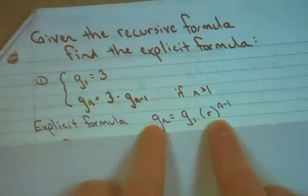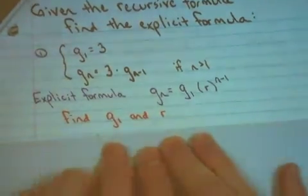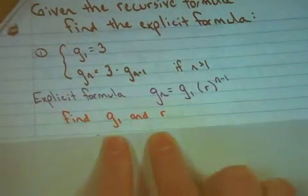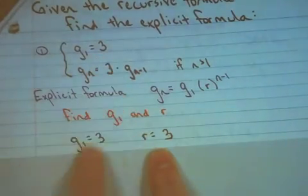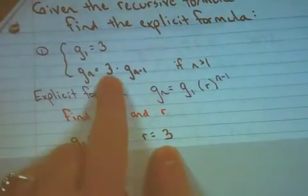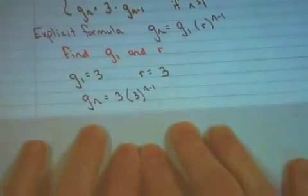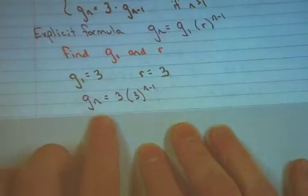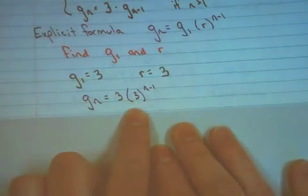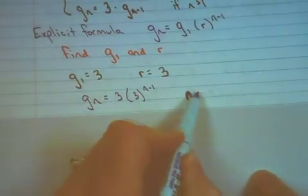We need to fill in the right pieces of information by identifying the g sub 1 and the r. The g sub 1 was given as 3. The r value is given here as 3. So now I just need to plug it in to the explicit formula and g sub n will be equal to 3 times 3 raised to the n minus 1 power for n greater than 1.